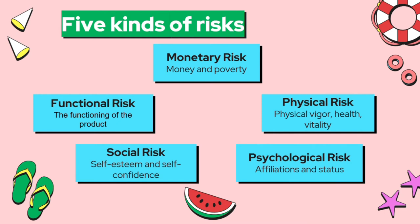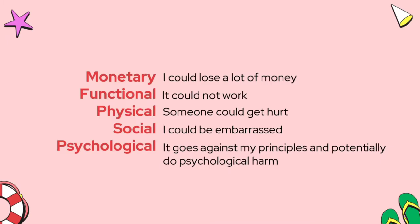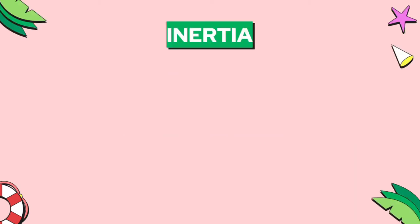There are five kinds of risk including objective and subjective factors: monetary — I could lose a lot of money; functional — it might not work; physical — one could get hurt; social — I could be embarrassed; and psychological — it could harm my principles and potentially cause psychological harm.